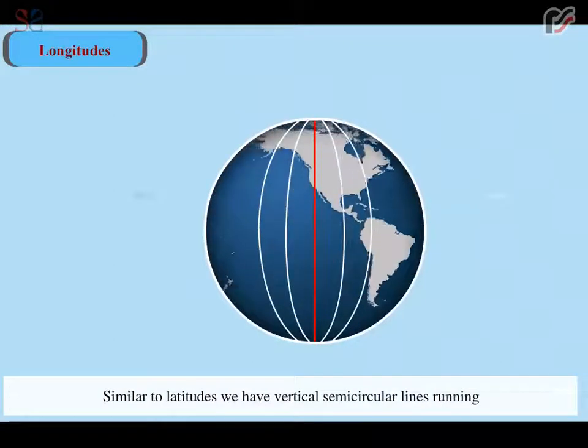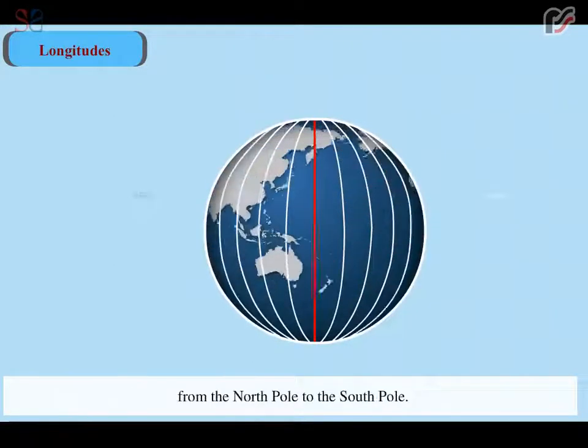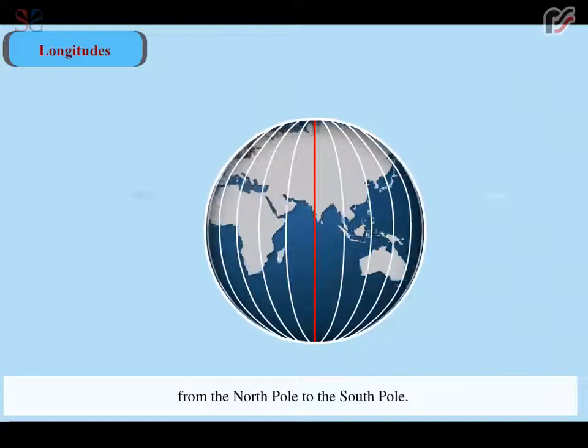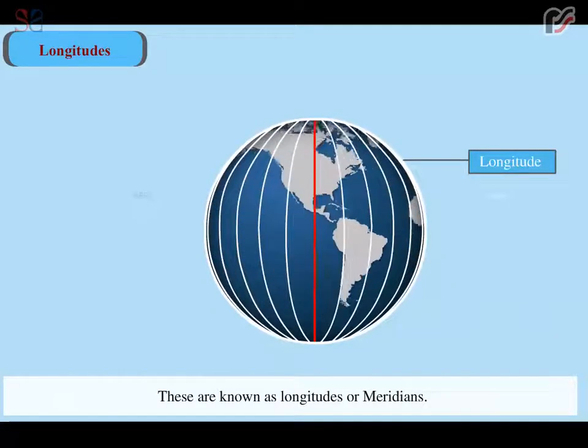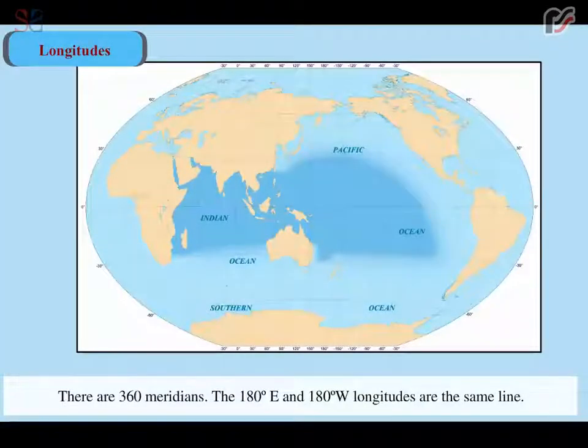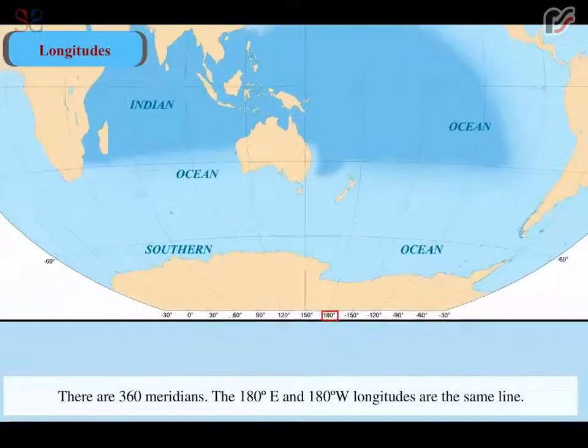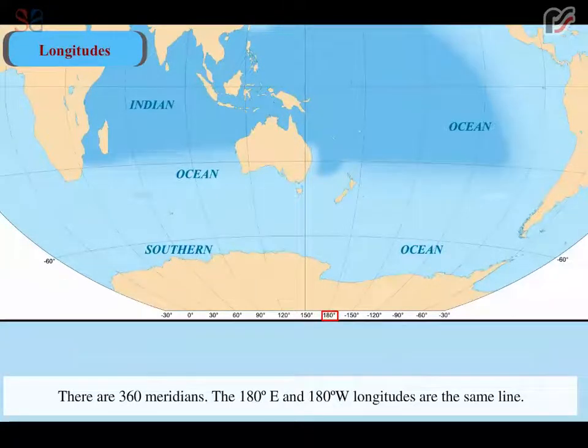Similar to latitudes, we have vertical semi-circular lines running from the north pole to the south pole. These are known as longitudes or meridians. There are 360 meridians. The 180 degree east and 180 degree west longitudes are the same line.